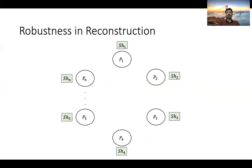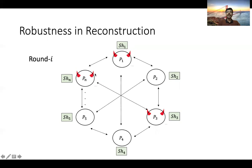To give more details about robustness, let's consider the reconstruction phase. The parties start with the shares handed to them by the dealer. We consider an adversary that could corrupt up to T of these parties. Reconstruction could proceed in multiple rounds, and in each round a party could send a message to every other party. The honest parties follow the protocol, whereas adversarial parties might deviate arbitrarily. At the end of reconstruction, the robustness requirement states that all honest parties output the secret S that was originally shared.